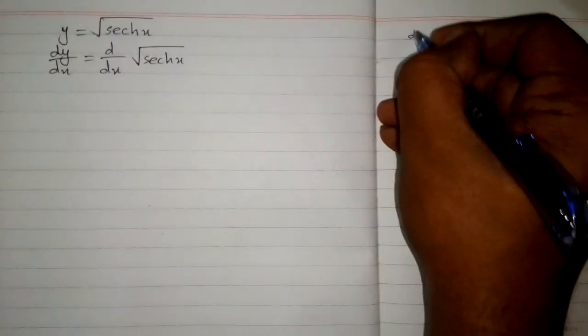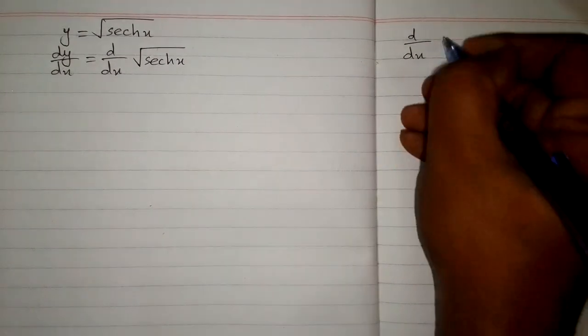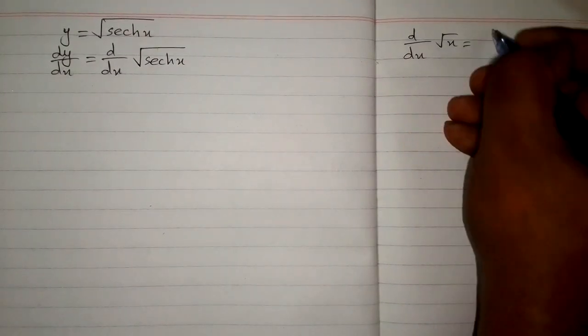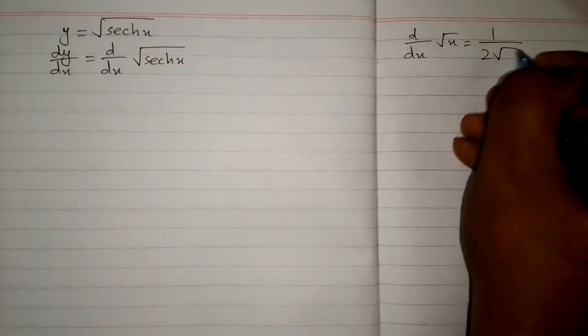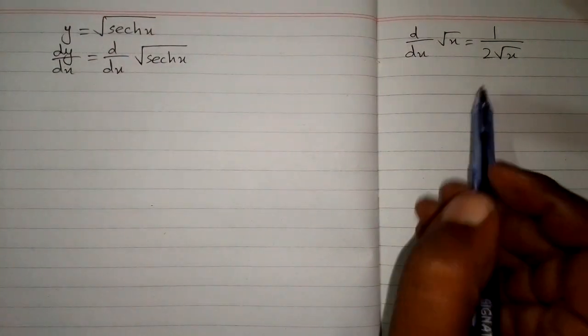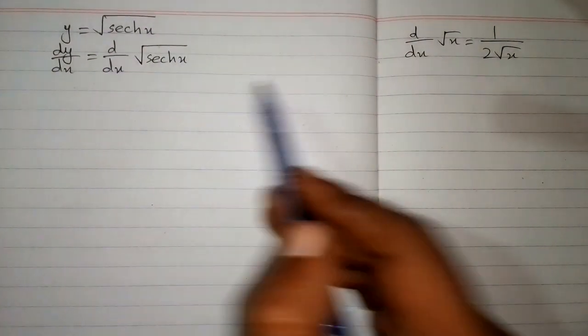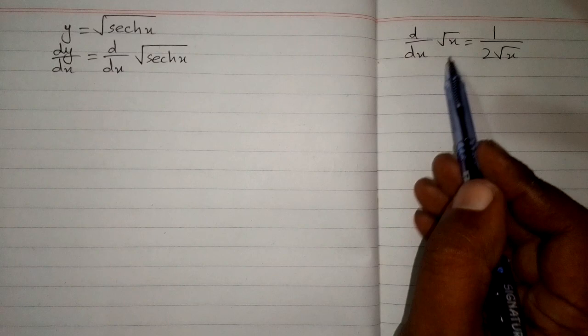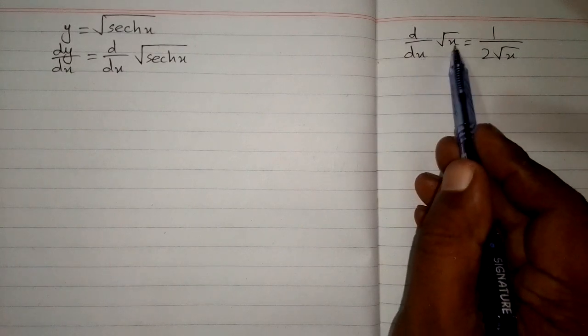So we know that the derivative of the square root of x is equal to 1 upon 2 square root of x. So we can apply this formula over here but in order to apply this formula this variable and this variable must be same.